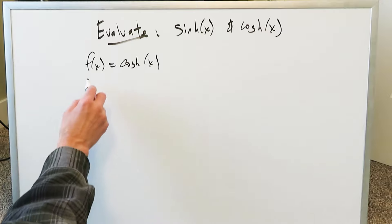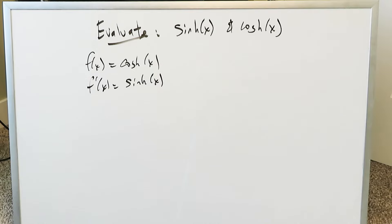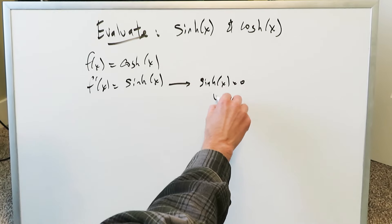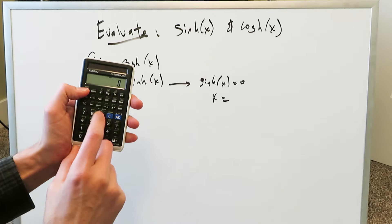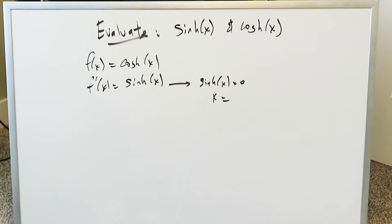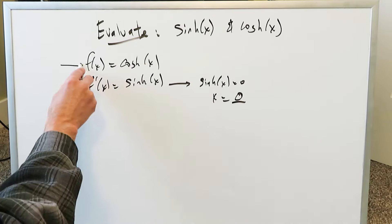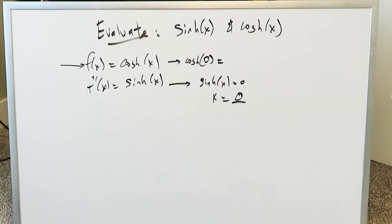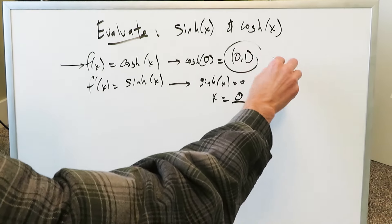First, we take the first order derivative of hyperbolic cosine and we get hyperbolic sine. We set hyperbolic sine equal to zero to find any critical point. Sine hx equals zero, so x equals the inverse hyperbolic sine of zero, which gives x equals zero. Plugging that into the original function, hyperbolic cosine of zero equals one. So we have a critical point at (0, 1).